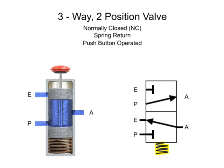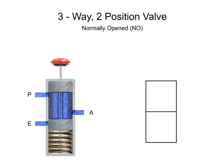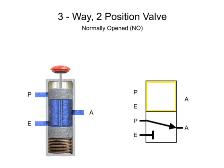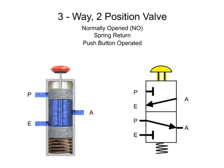The valve is also spring return and push button operated. Here is another three-way, two-position valve. This valve also has an inlet port P, exhaust port E, and output port A, but they are in a different configuration. In its normal position, exhaust port E is blocked and fluid flows from pressure port P to outlet port A. The second position pressure port P is blocked and allows fluid to flow from outlet port A to exhaust port E. The valve is also spring return and push button operated.